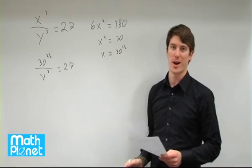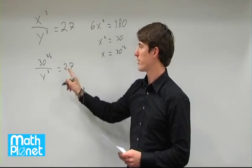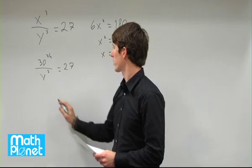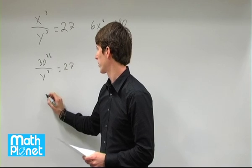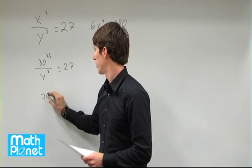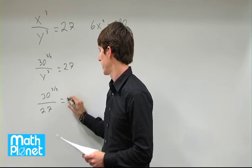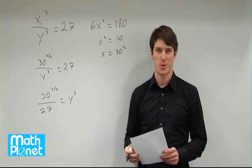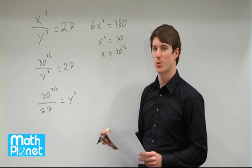Again, we're looking for y squared. We're looking for this area of the smaller cube. So let's solve this equation for y and then we can find 6y squared. So we'll multiply both sides by y cubed and then divide both sides by 27. 30 to the power of three halves over 27 equals y cubed. We want 6y squared. So we need to change this y cubed to a y squared.